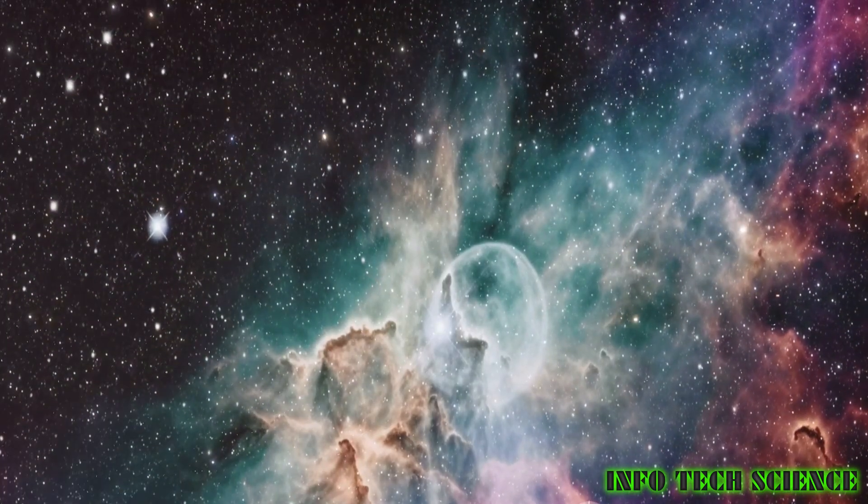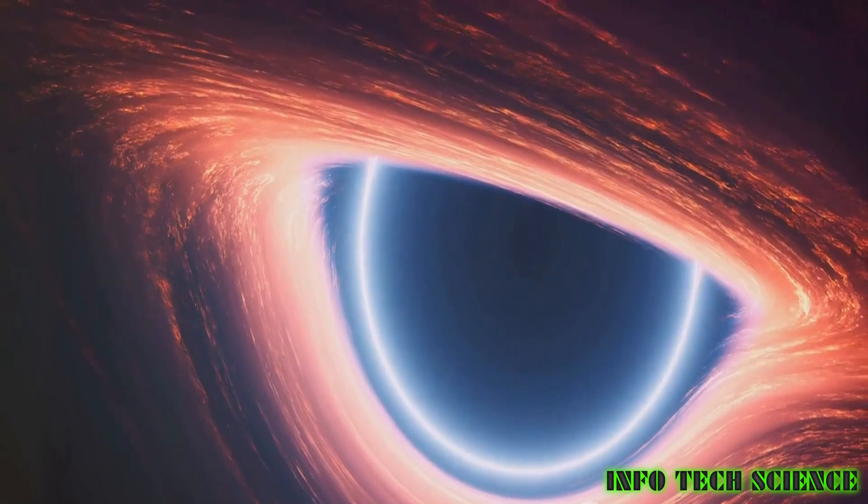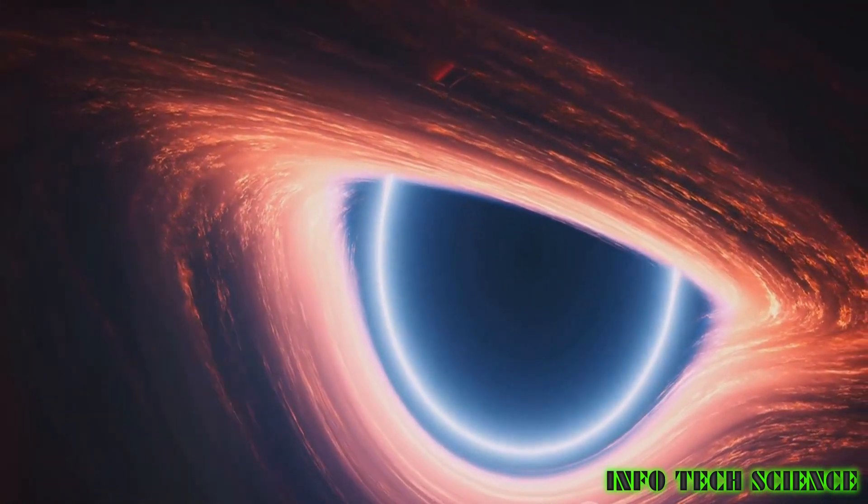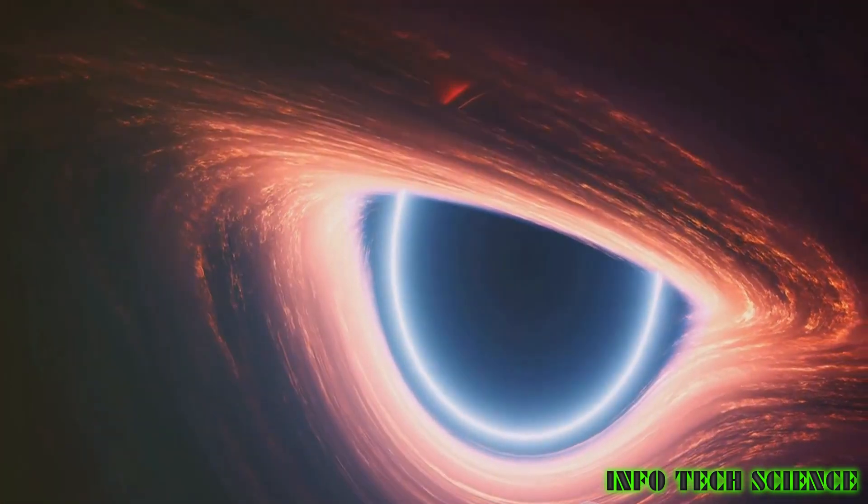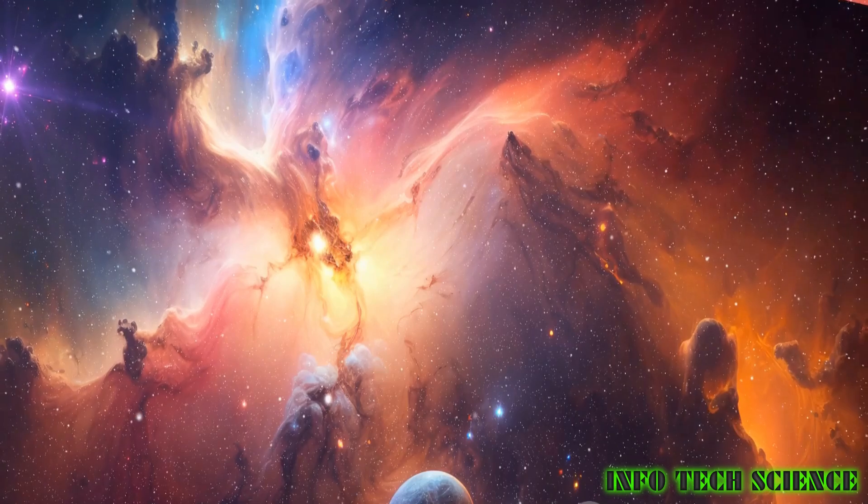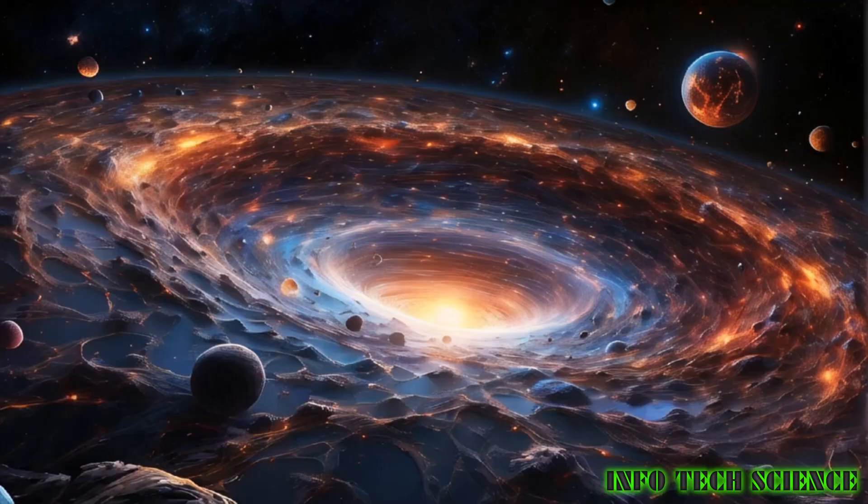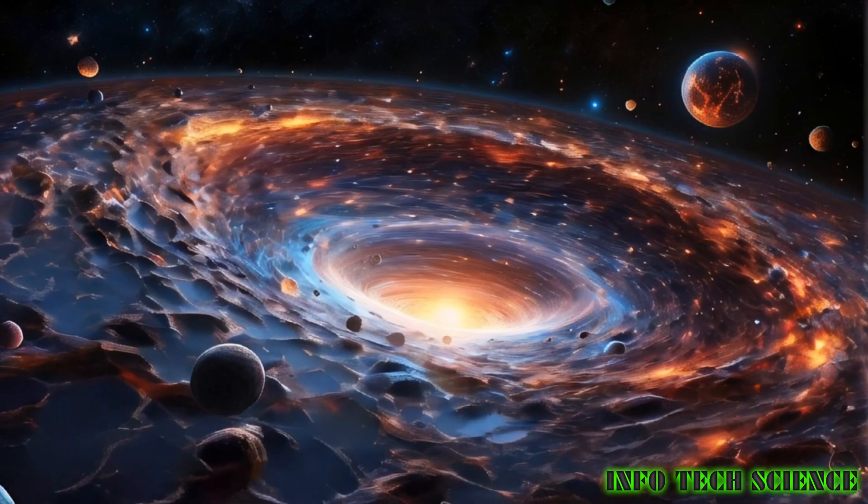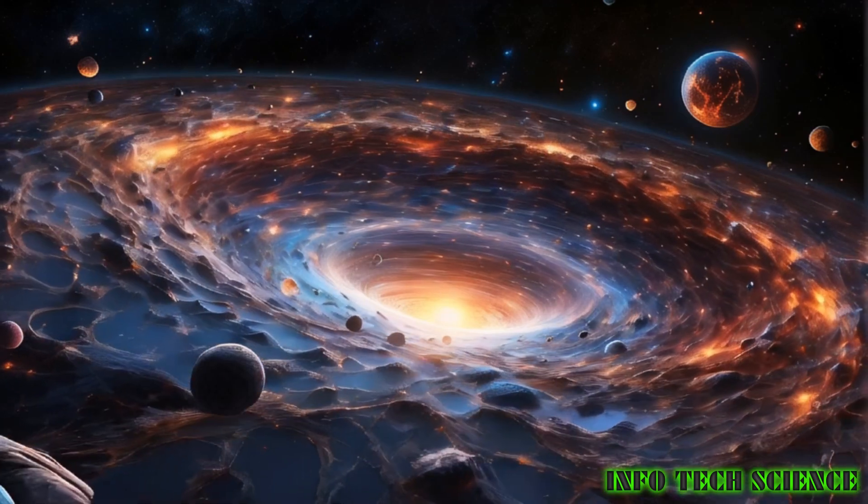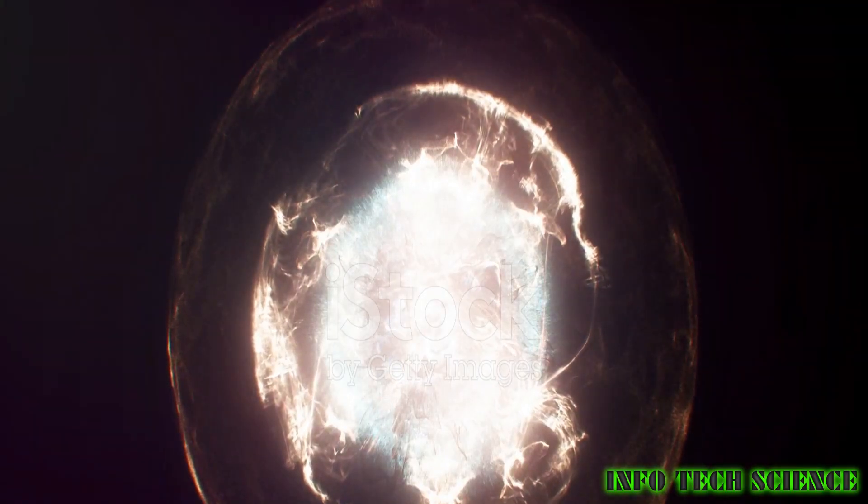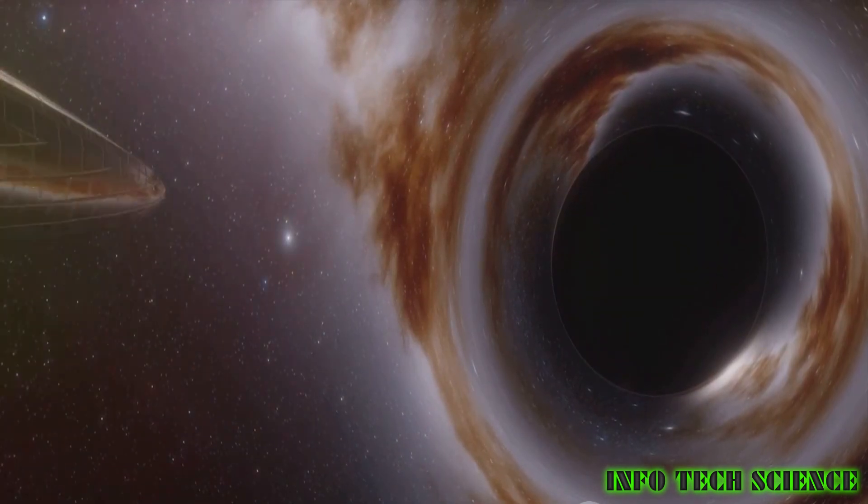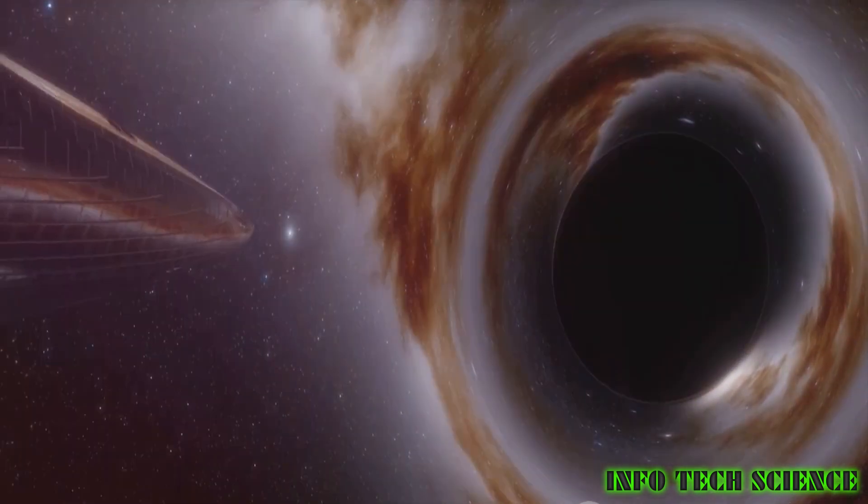But hold on, the cosmos has more surprises in store. Scientists have discovered something even more astonishing, a cryptic ancient star harboring a black hole within. This celestial enigma not only baffles scientists but also holds clues to understanding the universe's evolution. You might wonder, how can a black hole exist inside a star? Why were these stars so colossal? And what would be the aftermath of such a black hole star straying into our solar system?